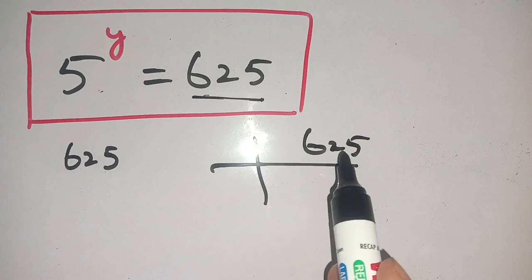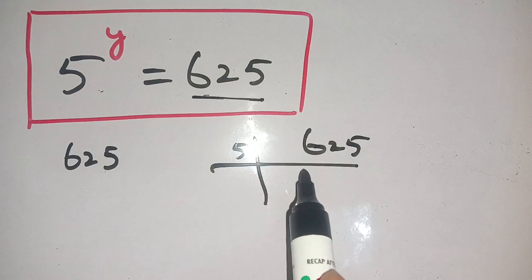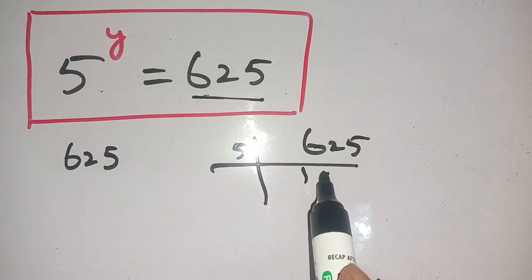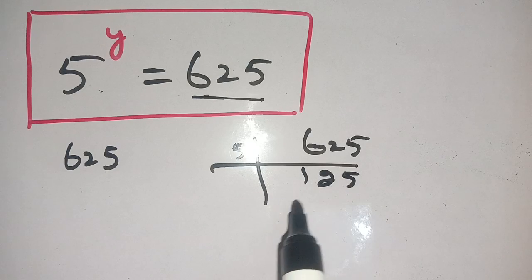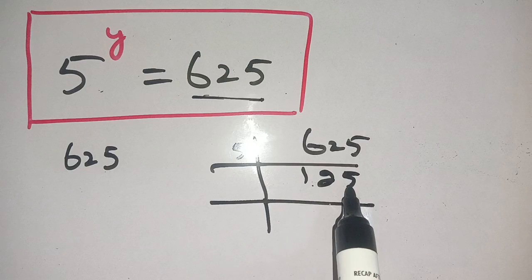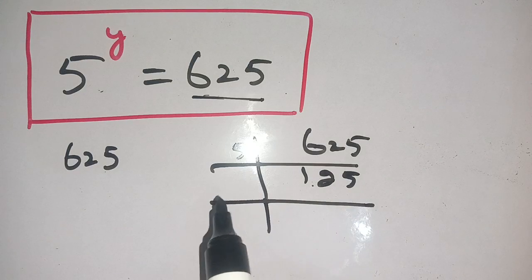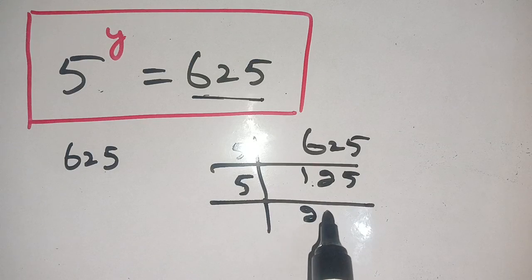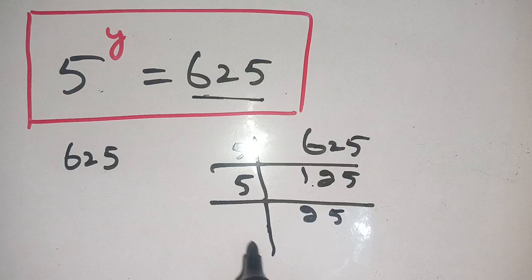Thus it goes with 5. 5 times 1 is 5, 5 times 2 is 10, 5 times 5 is 25. No, 125. It is in a multiplication of 5, thus 5 times 2 is 10, 5 times 5 is 25.